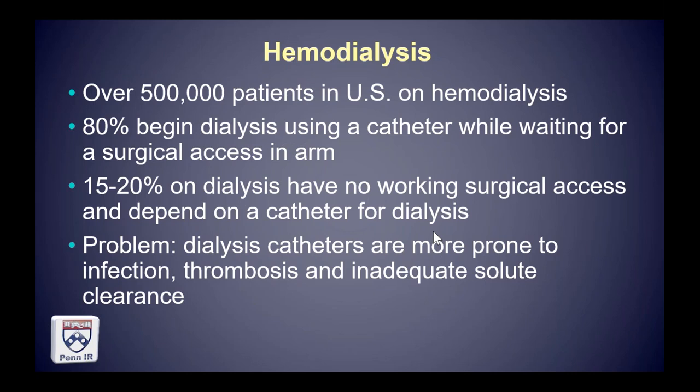They need a dialysis catheter for urgent so-called urgent start hemodialysis. For patients already on hemodialysis, 15 to 20% will ultimately have no usable venous access for creation of a new access because they've had prior shunts that have failed, and the catheter they have is their literal lifeline. When their catheter access ends, they have no means of getting hemodialysis, they're not a candidate for peritoneal dialysis or renal transplantation, and that determines their lifespan.